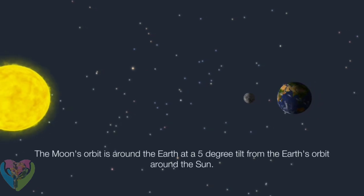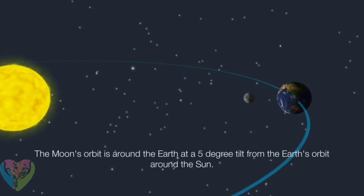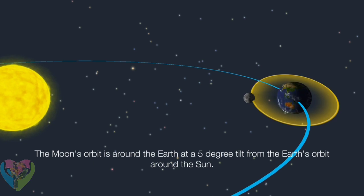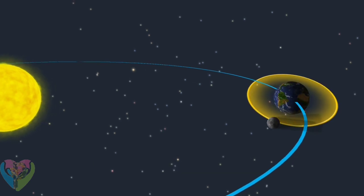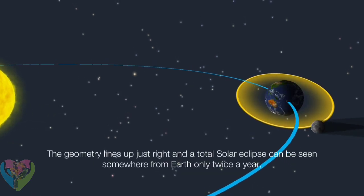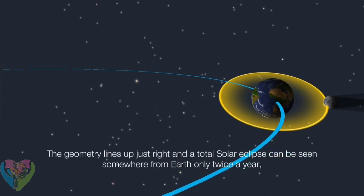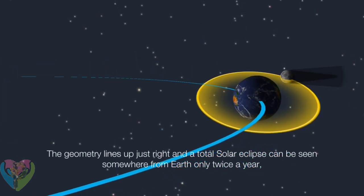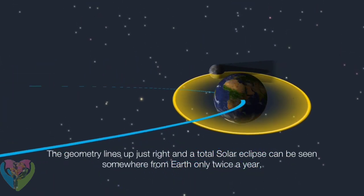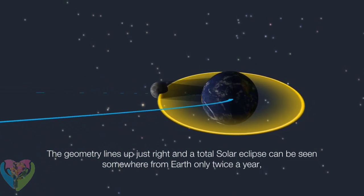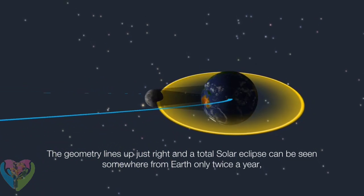The moon's orbit is around the earth at a 5-degree tilt from the earth's orbit around the sun. When the geometry lines up just right, a total solar eclipse can be seen somewhere on the earth only twice a year.